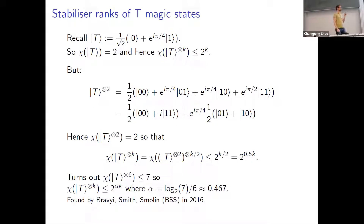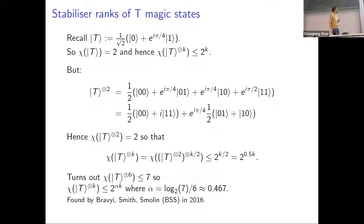It turns out that with six magic states, there's a decomposition into just seven terms — which is not at all obvious. This means we can scale with 2^(αk), where α = 0.467. This was found by Bravyi, Smith, and Smolin, so I'll call it the BSS decomposition. For those familiar with magic state decompositions, yes, I'm aware there are better ones — we'll get to that later. But this 6-to-7 decomposition gives quite good scaling.